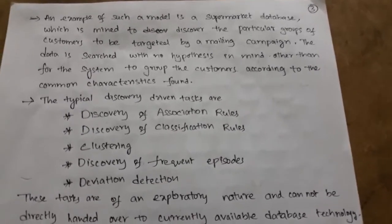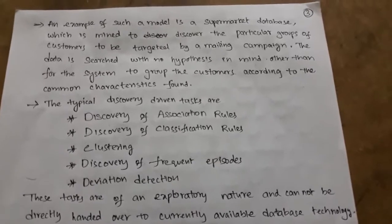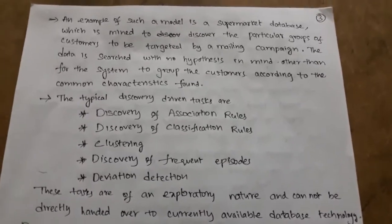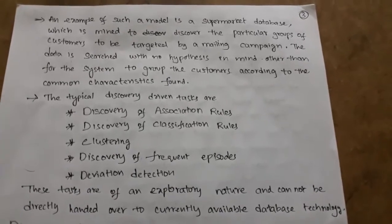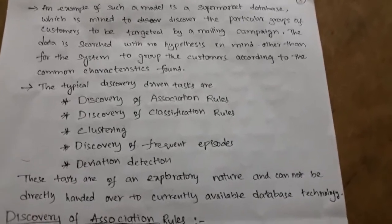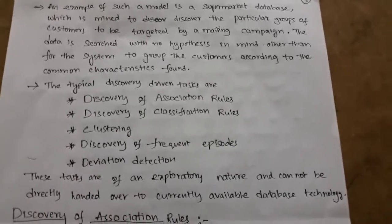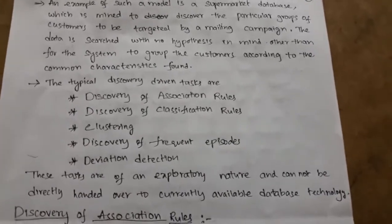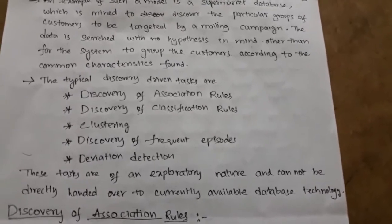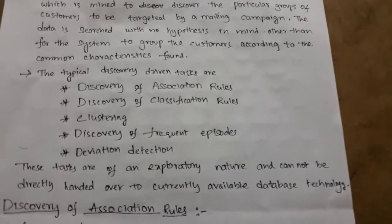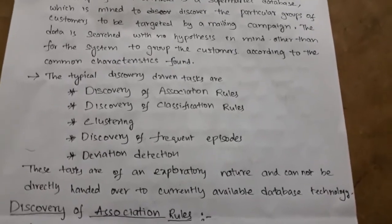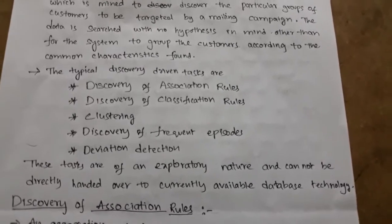In the verification model, a hypothesis is used; in the discovery model, there is no hypothesis — that is the main difference. The typical discovery driven tasks are: discovery of association rules, discovery of classification rules, clustering, discovery of frequent episodes, and deviation detection.